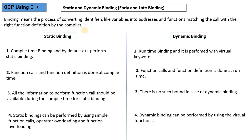The two types are static binding and dynamic binding. By default, binding in C++ is static binding. All programs use static binding by default, which happens at compile time. If you want to decide what to do at run time, then you use dynamic binding.